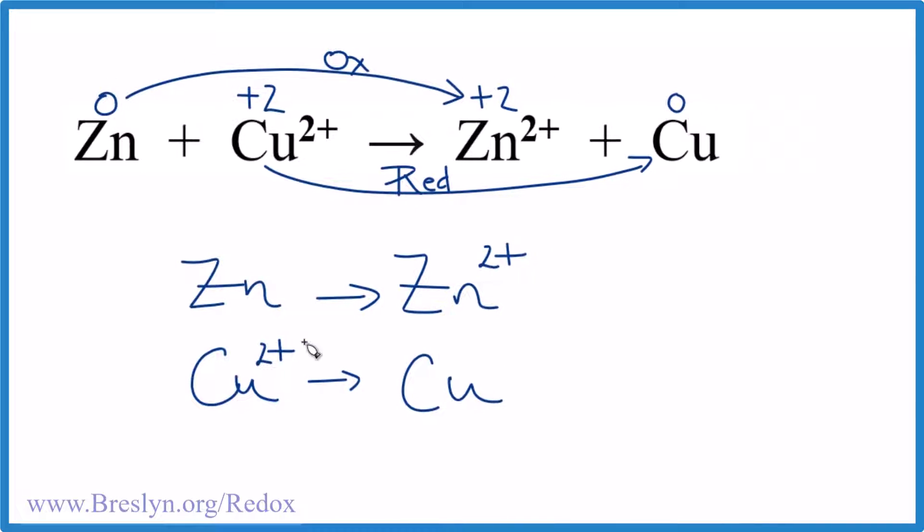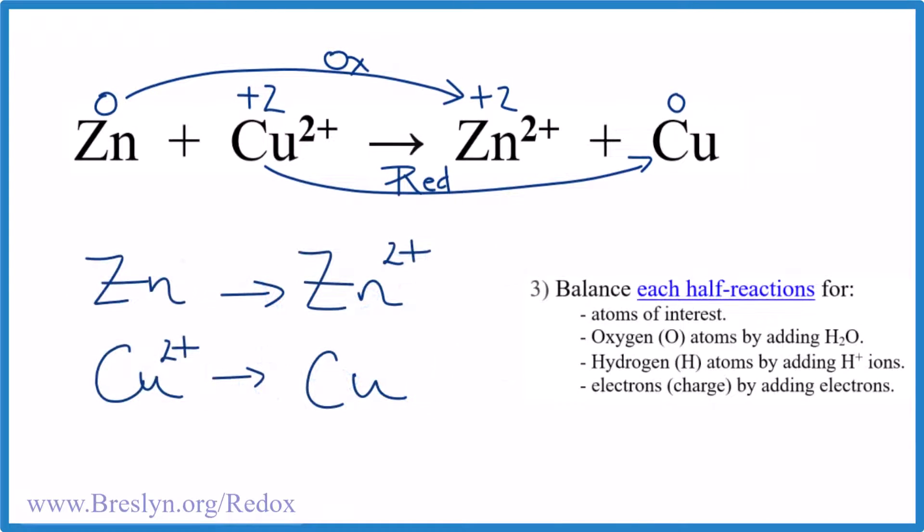First we make sure the atoms are balanced. Zinc, zinc, copper, copper. We're all good there. Then we would balance the oxygen and the hydrogen atoms, but there aren't any. So we don't have to do any of that.